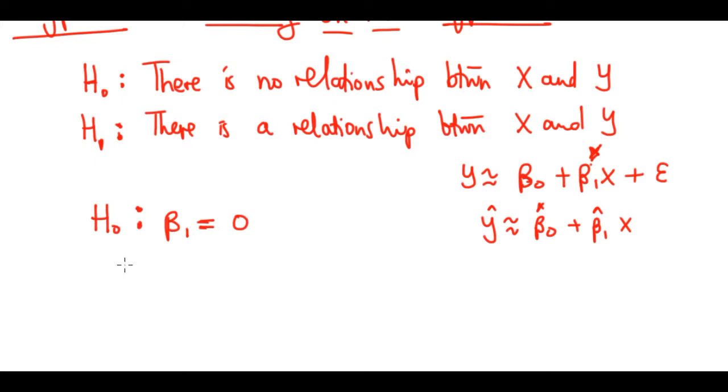The alternative hypothesis saying there is a relationship means beta1 is not equal to zero. This is essentially a two-sided hypothesis test — you can go through the full theory, but that's not exactly what we're doing here.